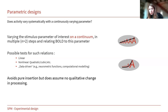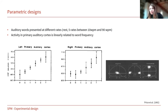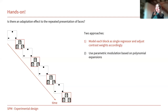The nice thing about parametric designs is that they avoid the pure insertion problem because they serve as their own controls — you are comparing the very same process at different quantitative levels (loudness, frequency, etc.). However, we must assume there are no qualitative changes while varying the degree of the regressor. A classic example from the nineties shows that subjects heard words presented at different rates, and the primary auditory cortex activation correlated with the rate of word presentation: the faster the presentation, the higher the activation.